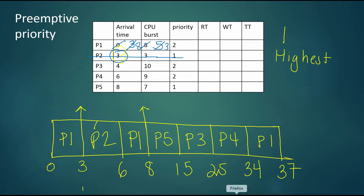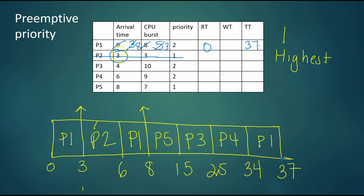We again have 100% CPU utilization, just a different order of process execution. P1 arrived at time zero and first got on the CPU at time zero, so response time is zero. P1 completed at time 37, giving a turnaround time of 37. Out of those 37 time units active in the system, only eight were on the CPU, so P1 spent 29 time units waiting in the ready queue.